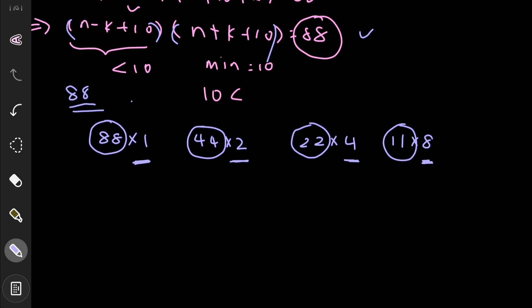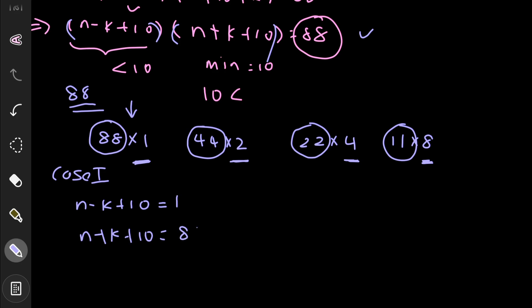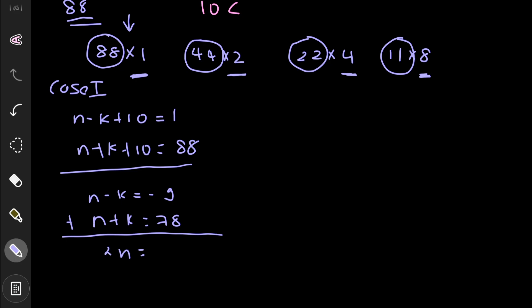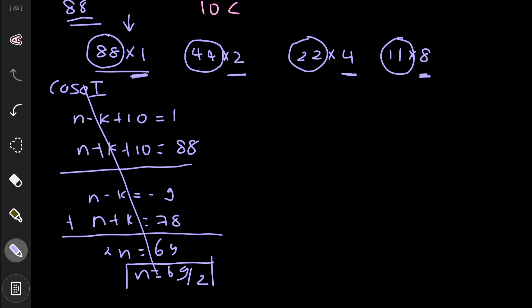Case 1: 88 × 1. We set (n − k + 10) = 1 and (n + k + 10) = 88, giving n − k = −9 and n + k = 78. Adding: 2n = 69, so n = 69/2. This is not an integer, so Case 1 is rejected.